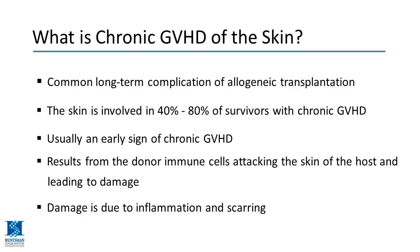The skin is involved in up to 80% of survivors with chronic graft-versus-host disease. The damage done to the skin or other organs is usually due to inflammation, scarring, and a fibrotic process. That's what differentiates chronic graft-versus-host disease from the acute form — chronic GVHD is a syndrome of fibrosis forming scar tissue.